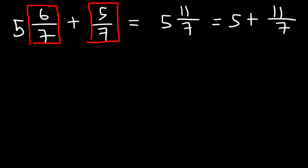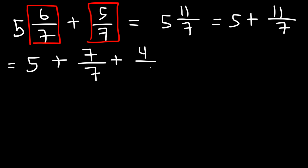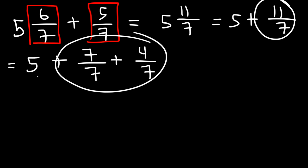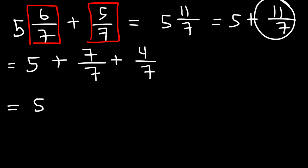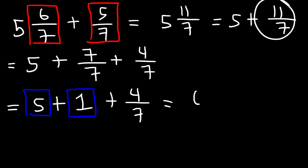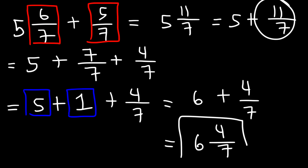So what should we do with 11 over 7? The best thing to do is to separate this into two smaller fractions, one of which is 7 over 7 because dividing 7 over 7 gives you a whole number. The difference between 11 and 7 is 4, so the remaining part is 4 over 7. Now we can divide 7 by 7 and replace it with 1. 5 plus 1 is 6, so we have 6 plus 4 over 7, which is equal to 6 and 4 sevenths.